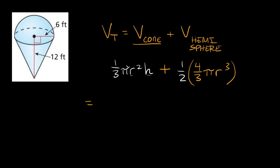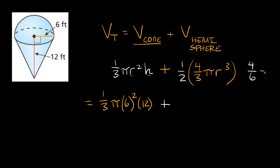So this is all equal to one-third times pi times the radius squared. For the cone, the radius is given as 6 feet, so we plug in 6 squared, times the height of the cone which is 12 feet. Then we add the volume of the hemisphere. We can combine these fractions right away: one times four is four on top, and two times three is six on the bottom, which reduces to two-thirds.